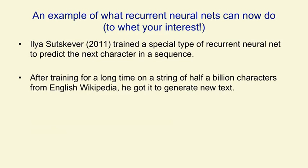Ilya trained it on lots and lots of strings from English Wikipedia. It's seeing English characters and trying to predict the next English character. He actually used 86 different characters to allow for punctuation and digits and capital letters and so on. After he trained it, one way of seeing how well it can do is to see whether it assigns high probability to the next character that actually occurs.